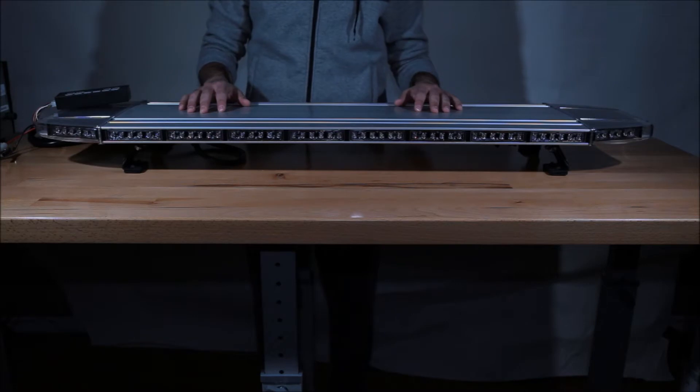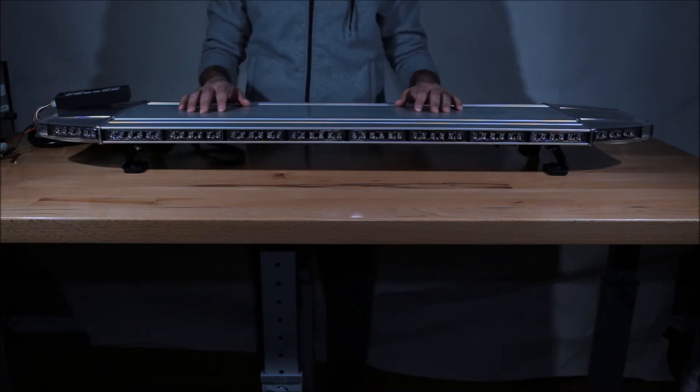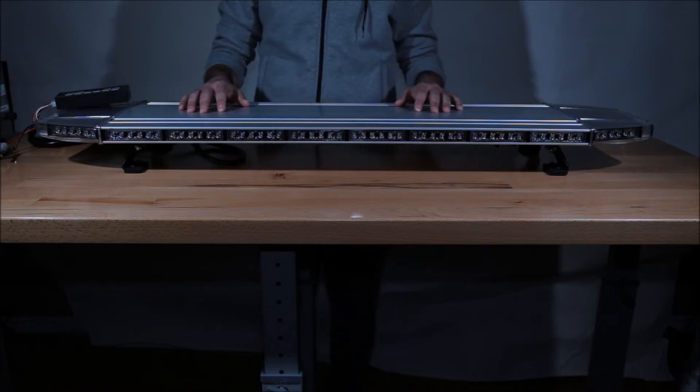The light bar also comes in three different LED modules: Linear, Fusion, and TIR. Today we're going to be going over the 48 inch Aviator Fusion Frontier light bar.